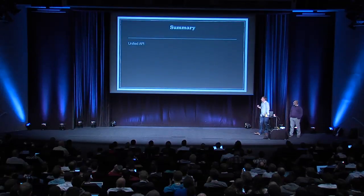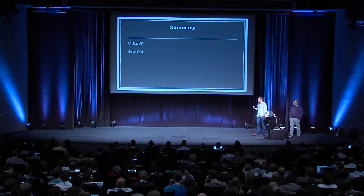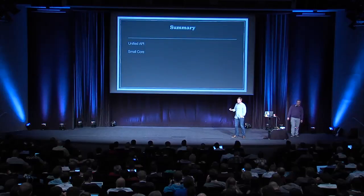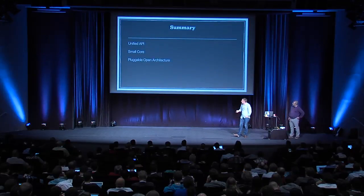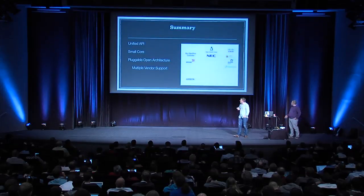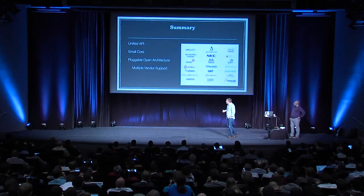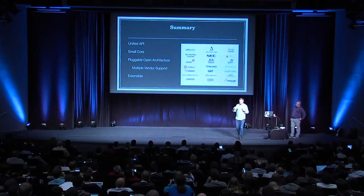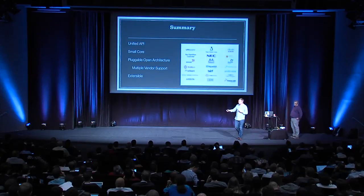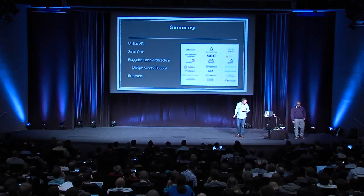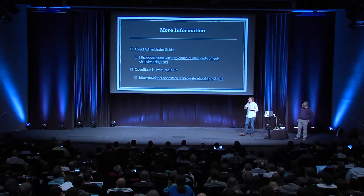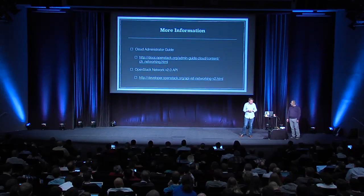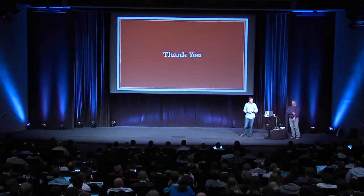In summary, Neutron is about a small unified API. It has a small core — essentially three main resources and several extended resources. It has a pluggable open architecture with multi-vendor support, and it's extensible so that as a vendor or the open source community dreams up a new feature, we have the ability to export that and make it available to deployers. For more information, the Cloud Administrator Guide and the V2 API are available. Thanks for listening — does anybody have any questions?